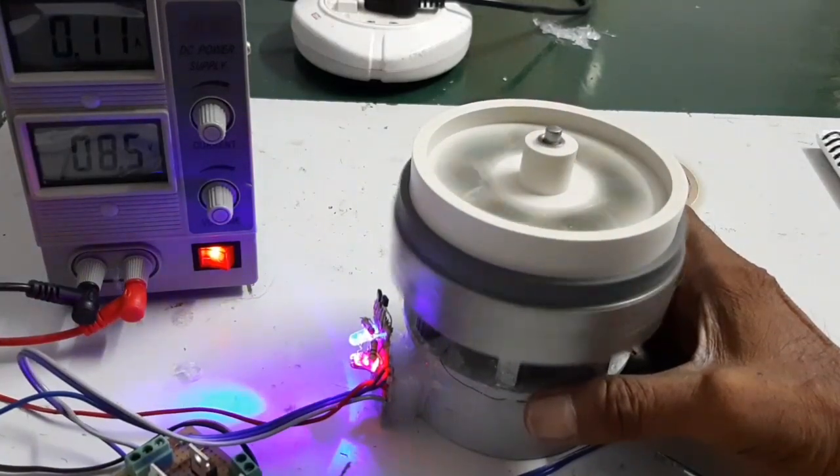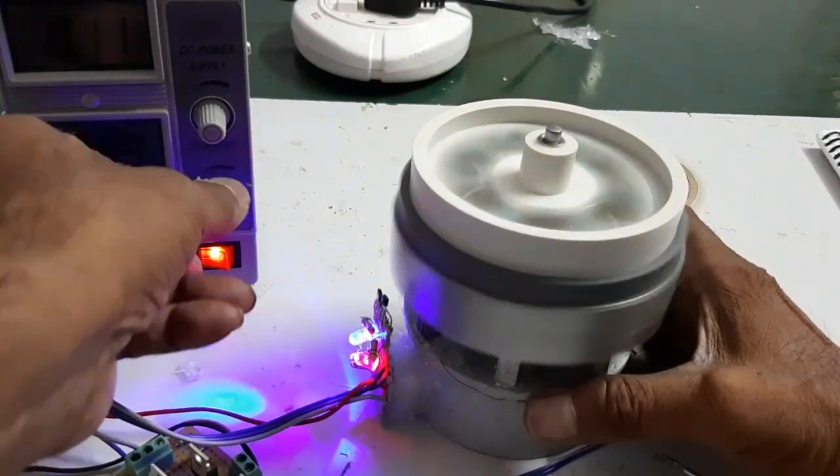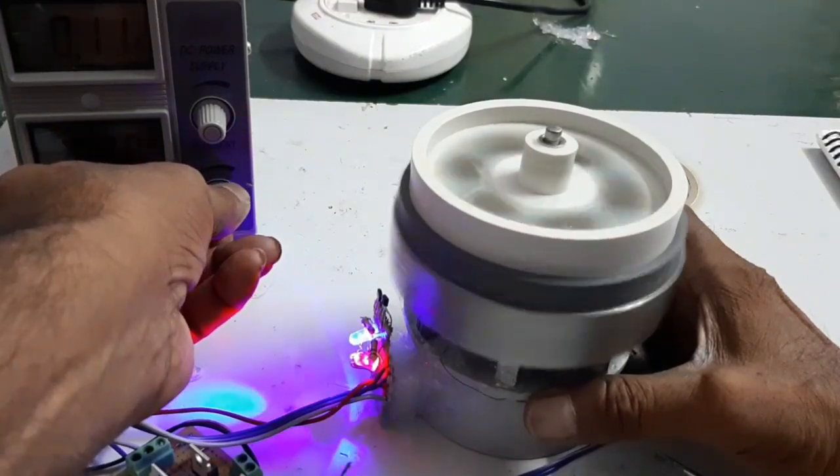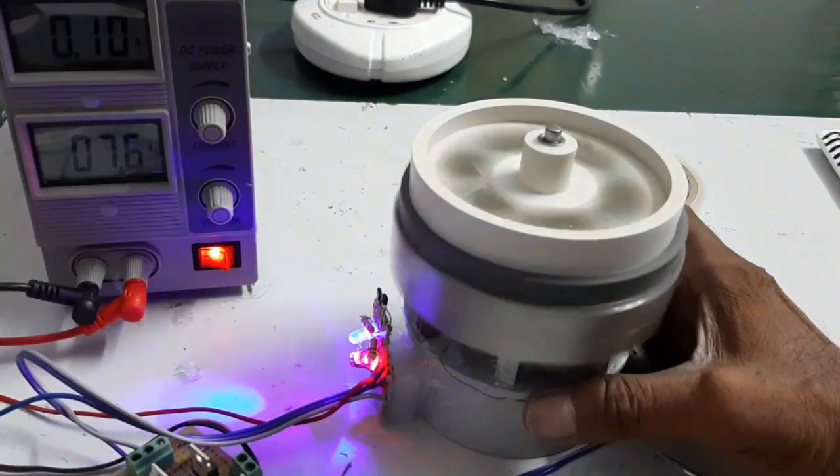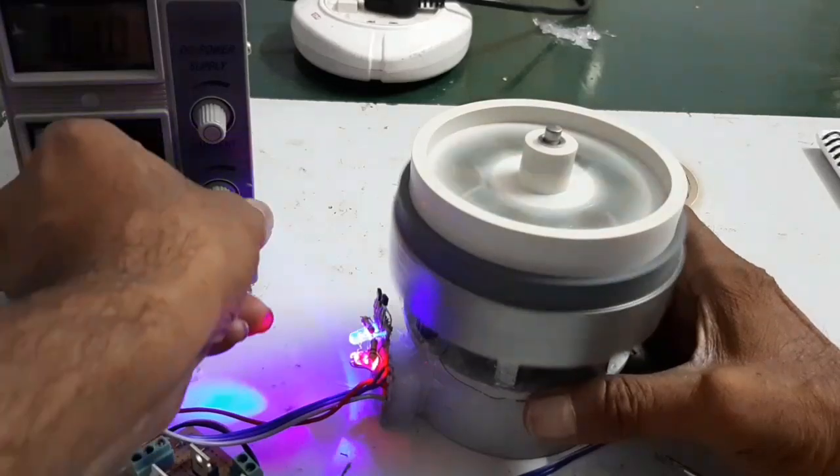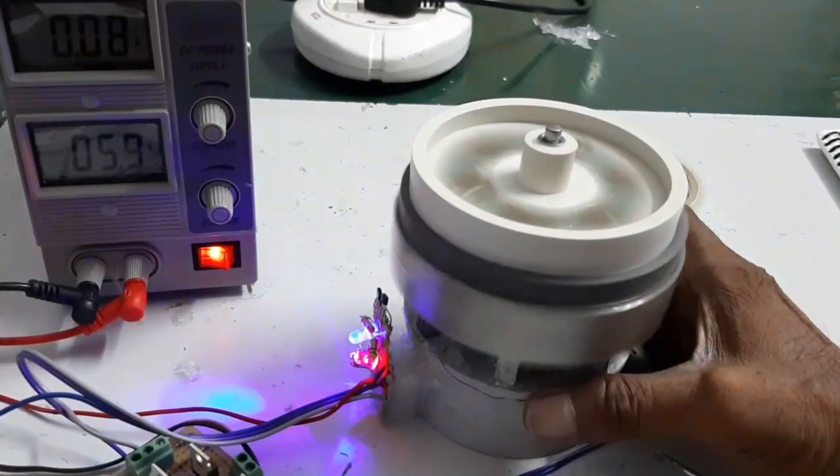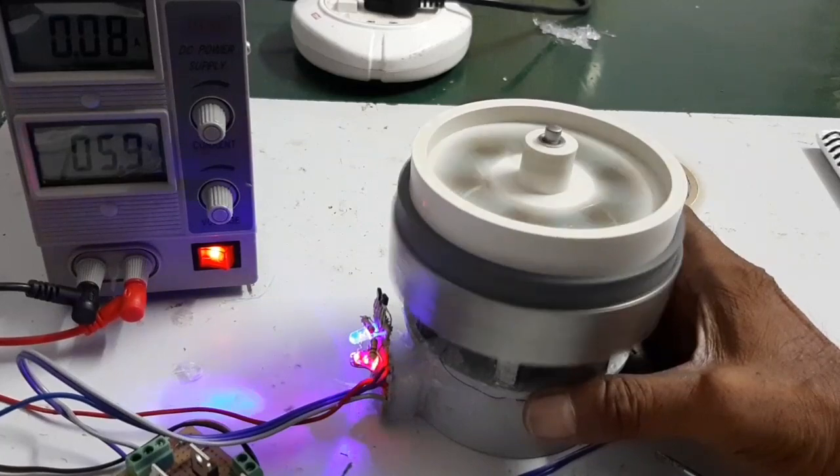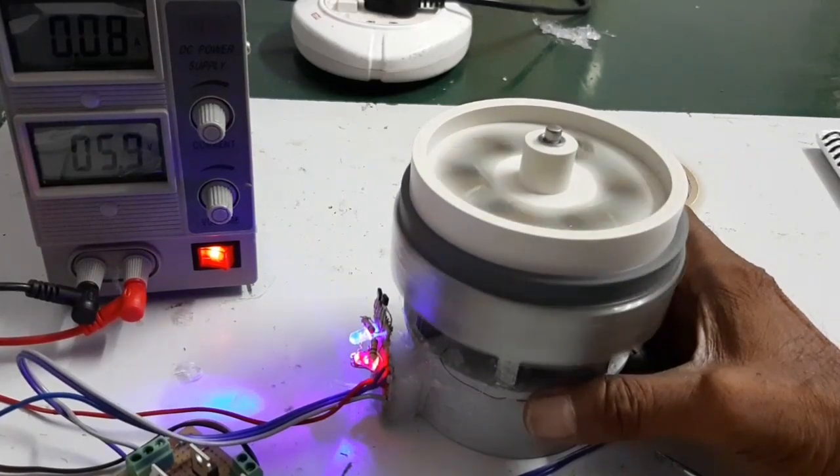At 8.5 volts, the current consumption is 0.11, and at 7.5 volts, the current consumption is 0.11. Now at 6 volts, the current consumption is 0.08.